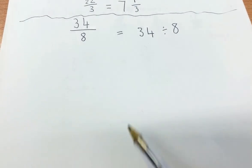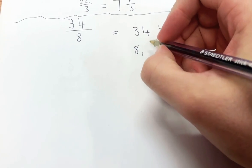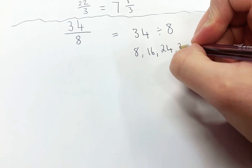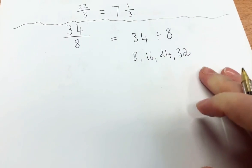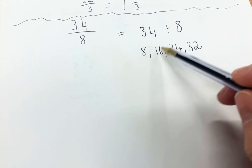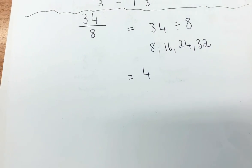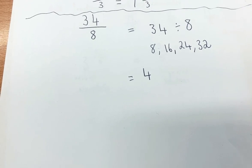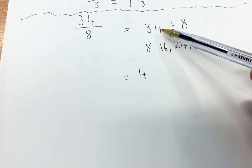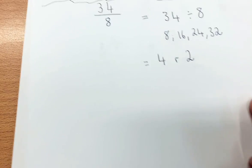So, how many eighths are there in 34? I'm going to count up in 8s: 8, 16, 24, 32. And we can't go any more because it would be too much. So I can get 4 groups of 8 in 34. But what is my remainder? If 8 times 4 is 32, I've got a remainder of 2 because I need 34. So 4 remainder 2.